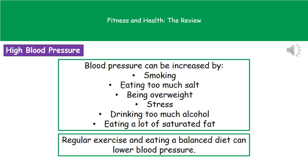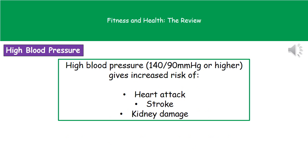To lower high blood pressure, we can take regular exercise and eat a balanced diet. High blood pressure is defined as a reading of 140 over 90 or higher. If you do have high blood pressure, you are at increased risk of having a heart attack, having a stroke, or damaging your kidneys.